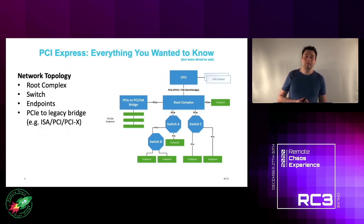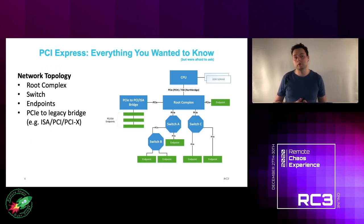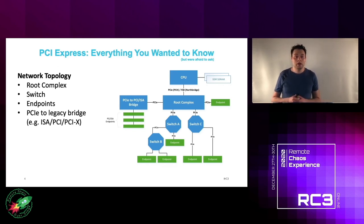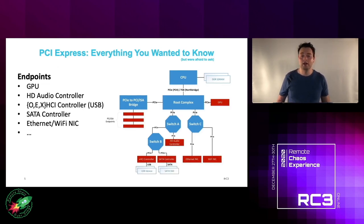PCI Express is essentially the core technology that allows connecting your CPU to the peripherals inside your system. It's basically a packet-switched network with many similarities to Ethernet, consisting of four components: the root complex, which connects the CPU to the PCIe network; switches, which divide bandwidth; endpoints; and a PCIe-to-legacy bridge for older hardware. Endpoints can be anything from a GPU to a USB controller to an Ethernet or Wi-Fi NIC.